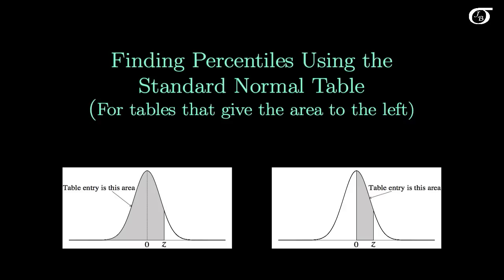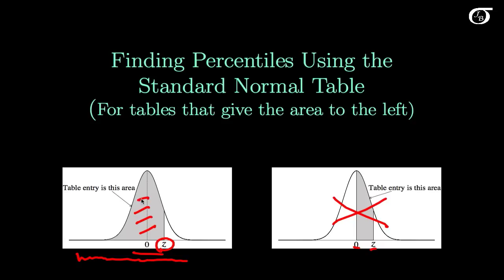Let's take a look at finding percentiles for the standard normal distribution using the standard normal table. This particular video uses the variant of the table that gives the area to the left. Another common type of table gives the area between 0 and the Z value you look up — I won't be looking at that here; I do cover that in another video. For this video, we are going to be finding a Z value when given an area.